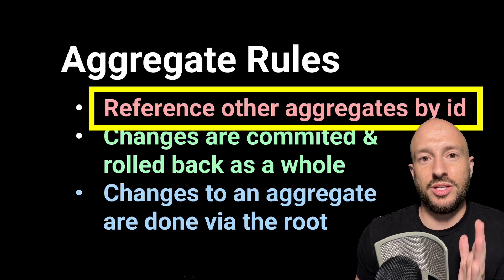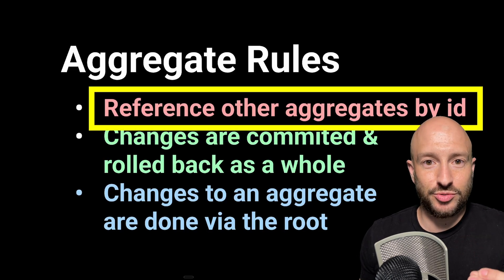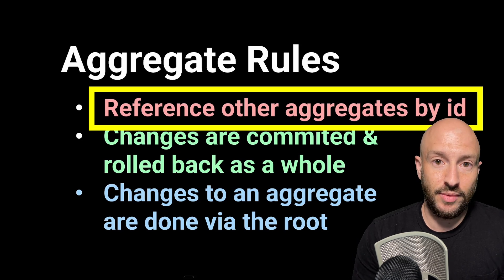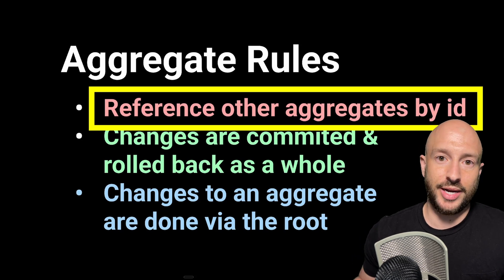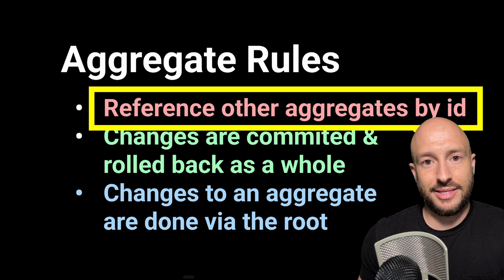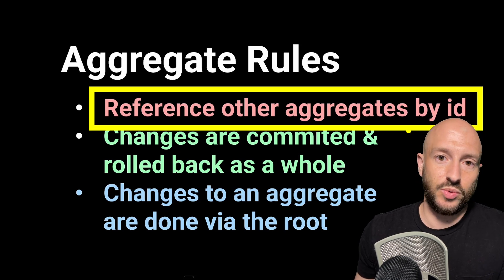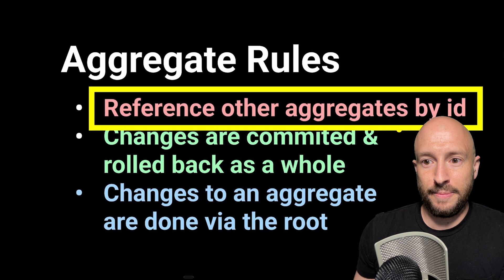The first rule is that if you need to reference another aggregate root from your aggregate, then you do it by referencing the ID. Something that's very common to do is to create a value object that contains the ID, and then you simply hold that value object. We saw it with the dinner, we'll look at that example again in a few minutes.